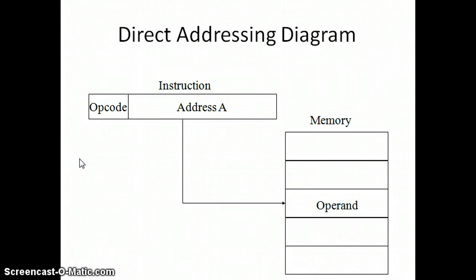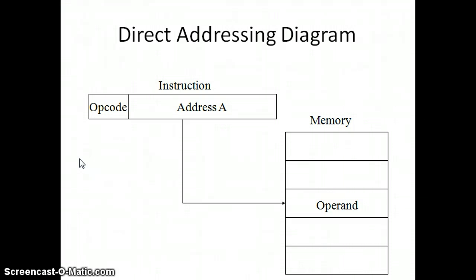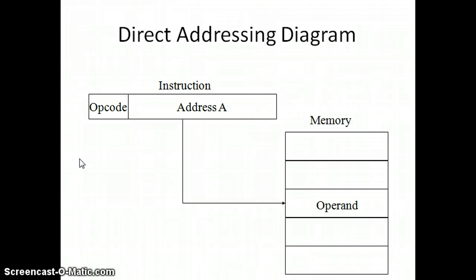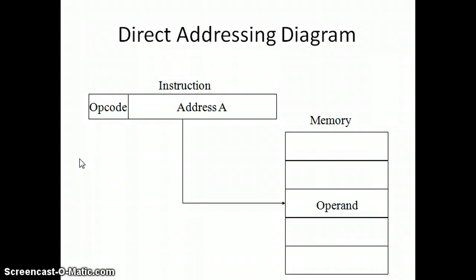This is a pictorial or diagrammatic representation of direct addressing mode. According to the opcode, the address of the accumulator is accessed, and through that address the operand stored in the memory location is retrieved. Finally, the data value of the accumulator is added to the data value of the accumulator and the result is stored in the accumulator.